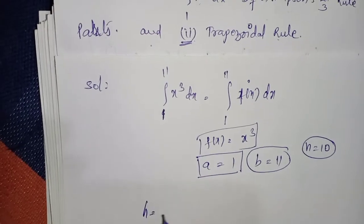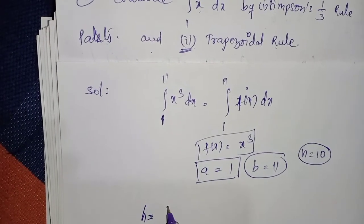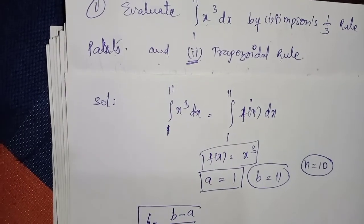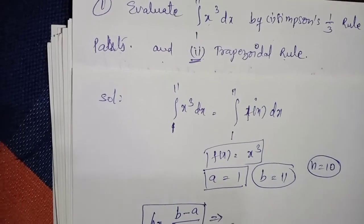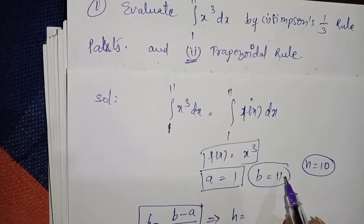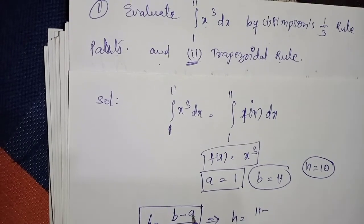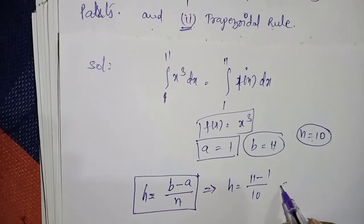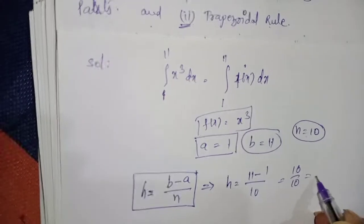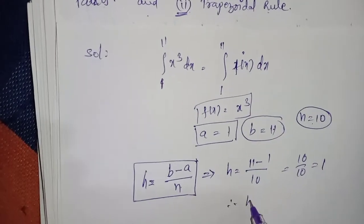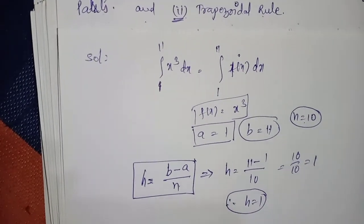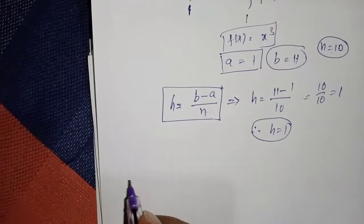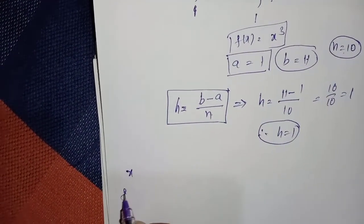Now find the width of the ordinates. The formula is h = (b − a) / n. Substituting: h = (11 − 1) / 10 = 10 / 10 = 1. Therefore h = 1. Now write down the common table for both the trapezoidal and Simpson's rules, with columns x and f(x) = x³.